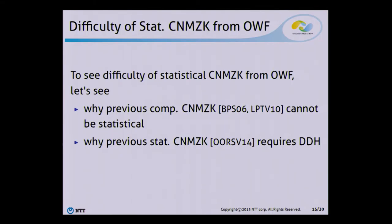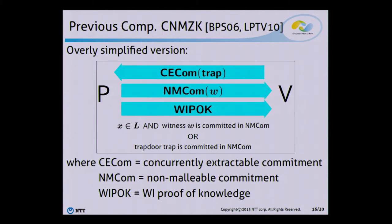Before explaining my own protocol, I first explain the difficulty of constructing statistical concurrent non-malleable zero-knowledge from one-way functions. To explain this, I explain why previous computational concurrent non-malleable zero-knowledge cannot be made statistical, and why previous statistical concurrent non-malleable zero-knowledge requires the DDH assumption. Very roughly speaking, previous computational concurrent non-malleable zero-knowledge protocols were designed in the following way.